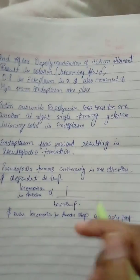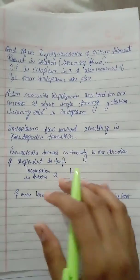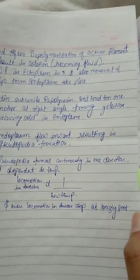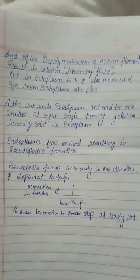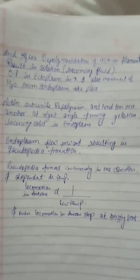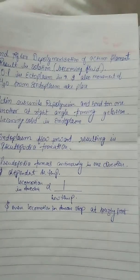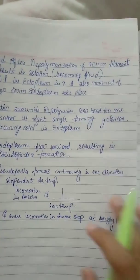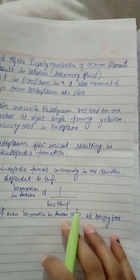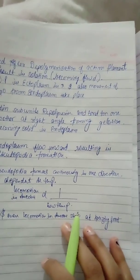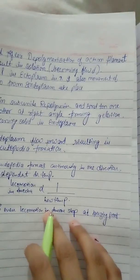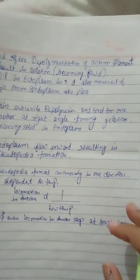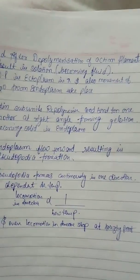This is all about sol-gel theory. The pseudopodia are formed continuously in one direction — always in only one particular direction. It is also a temperature-dependent process. At low temperature, this locomotion is very slow, and even at the freezing point, this amoeboid locomotion stops completely.